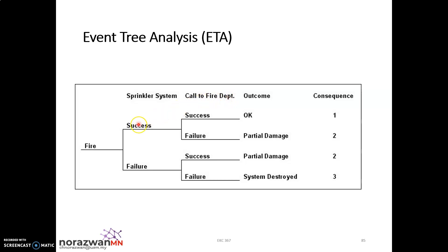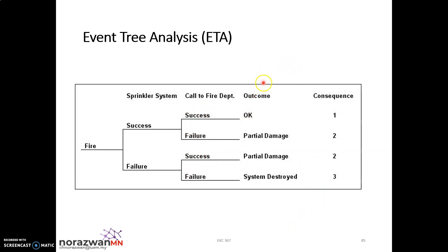Remember, earlier you have your success or failure based on each of your safety systems. So for your sprinkler system, you have your success and failure rate. Then your second safety system, the fire department, also has success or failure. But this time the success and failure will follow through the previous safety system. Before you call the fire department, you have your sprinkler system, so you have your success and failure rate as well. If you have a third defense or third safety system, then you again have all your success and failure rates.